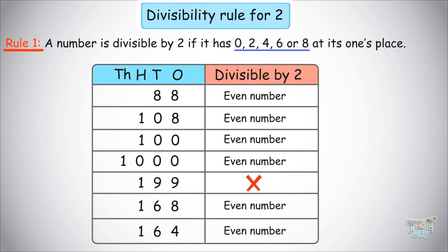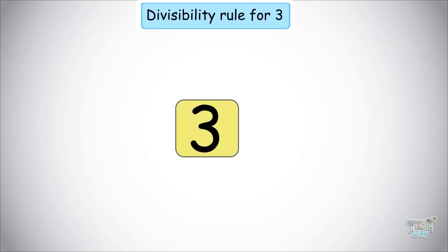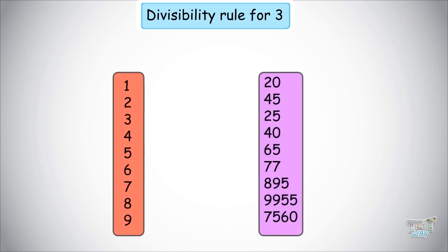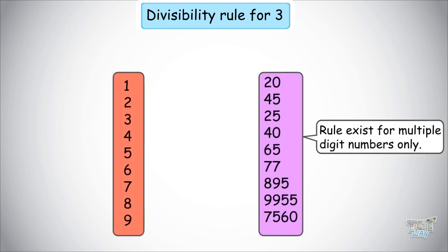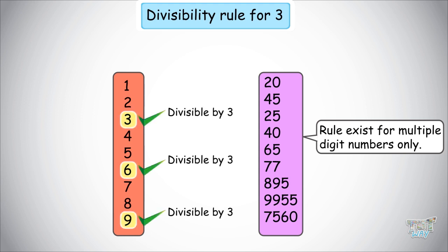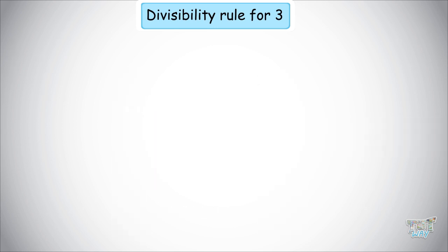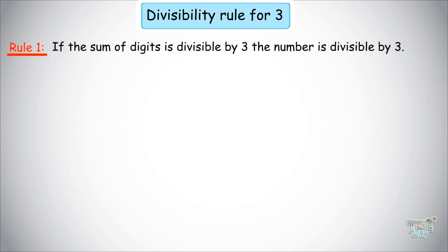Now let's learn how to find out if a number is divisible by 3. There is a rule to find whether a number is divisible by 3. For single-digit numbers, remember that 3, 6, and 9 are divisible by 3. For all numbers that have more than one digit, there exists another simple rule: if the sum of the digits is divisible by 3, the number will also be divisible by 3.